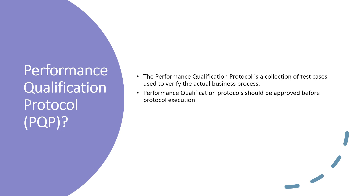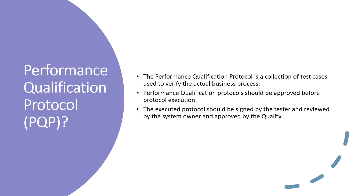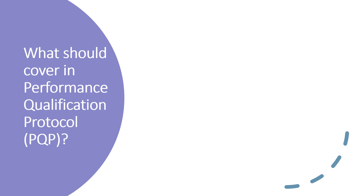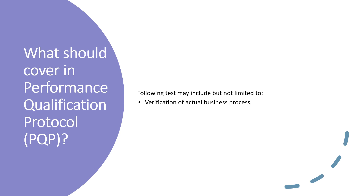Also, operational qualification must be executed and approved prior to starting the performance qualification. The executed protocol should be signed by the tester, reviewed by the system owner, and approved by the quality. The performance qualification should check the performance of the system with respect to the actual process — that is the process used for routine activity. The following tests may be included, but not limited to: verification of actual business processes.